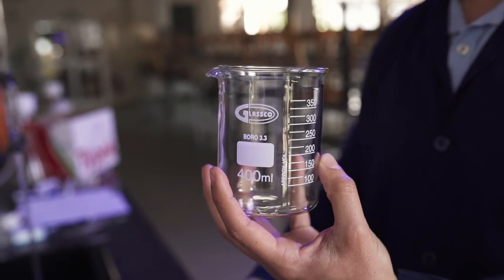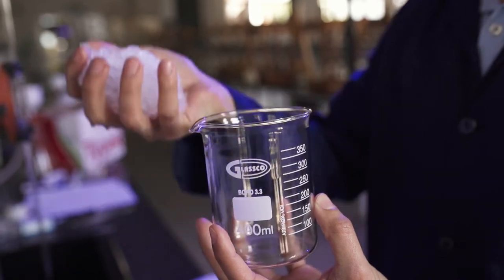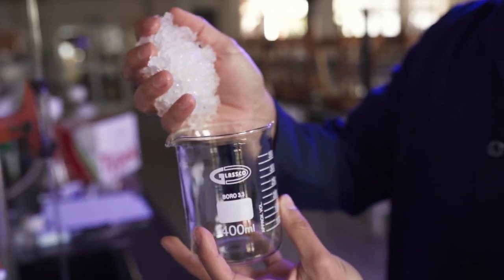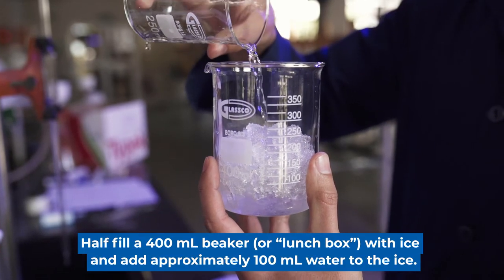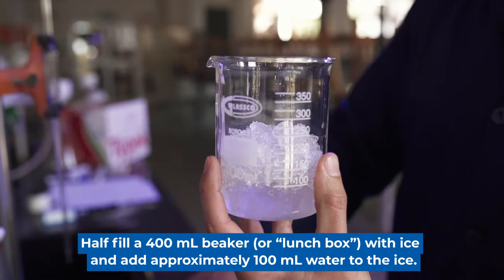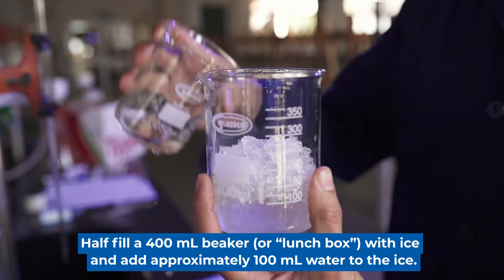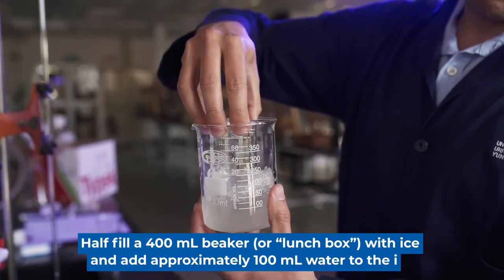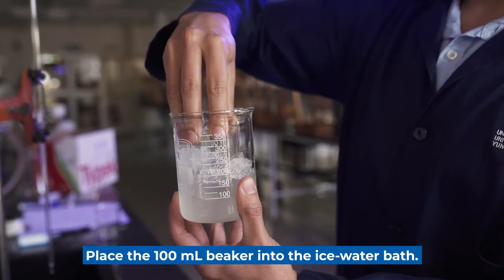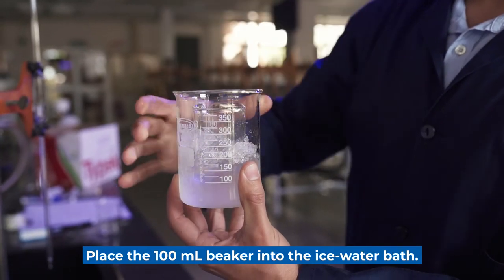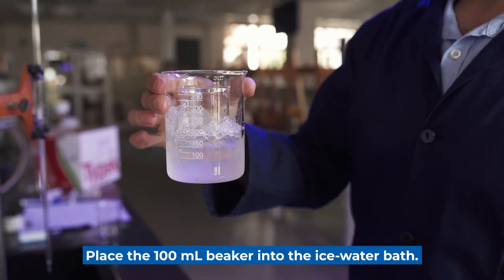Once the potassium nitrate solution is ready, we are preparing an ice bath for recrystallization. Fill the beaker halfway with ice and add water to make sure that the beaker containing the potassium nitrate solution is in contact with the ice cold water. Make sure that the meniscus of the potassium nitrate solution is beneath that of the cold water.